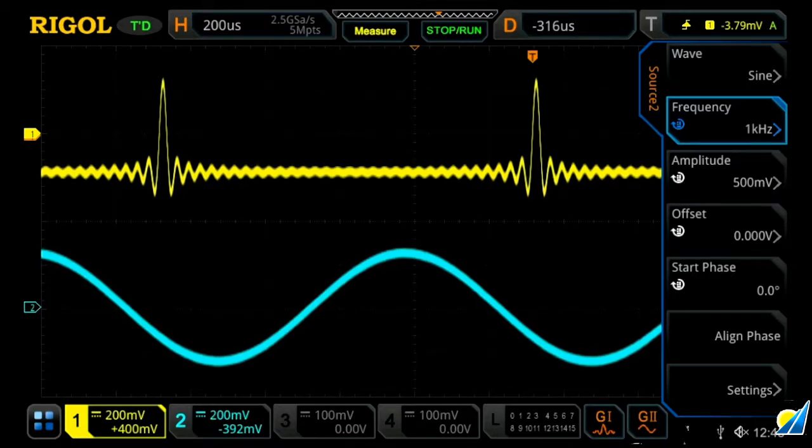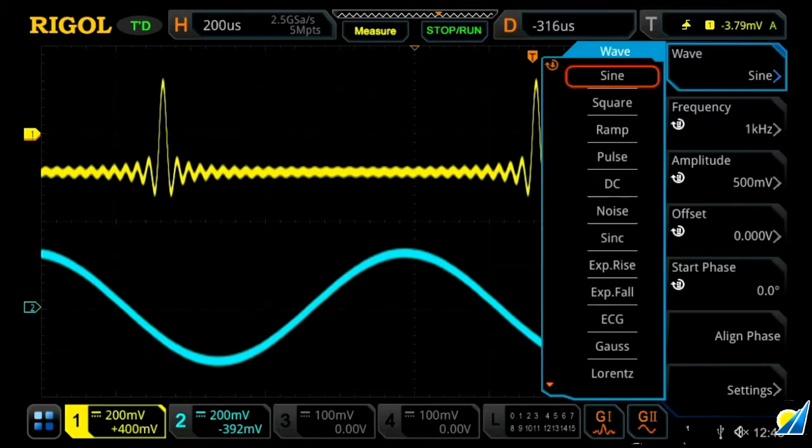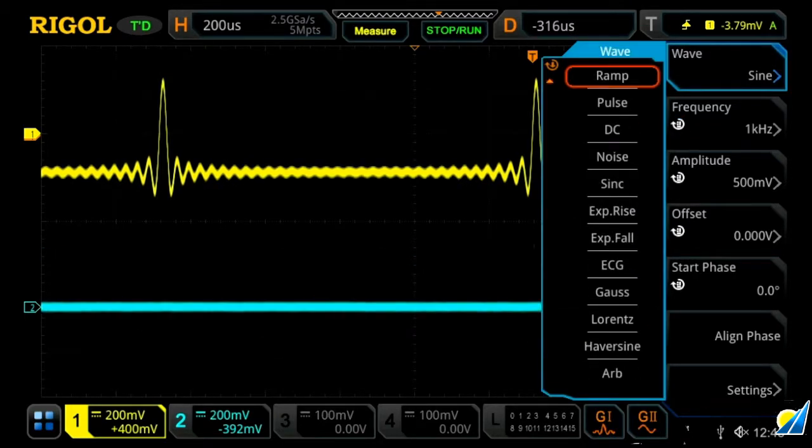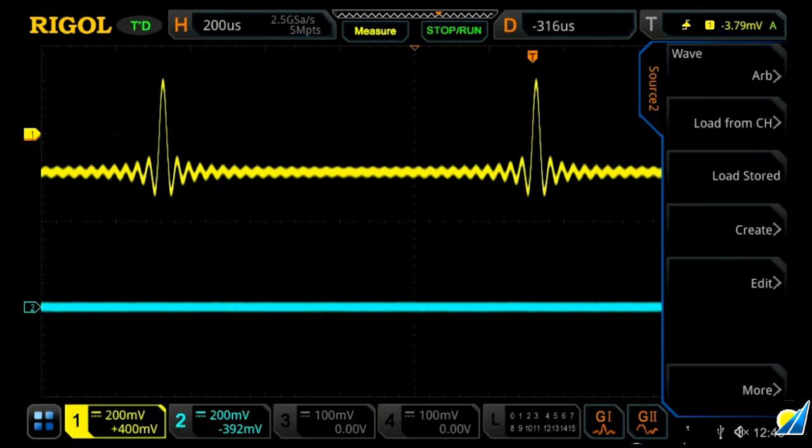And what we're going to do here is select our waveform. We're going to actually go all the way down and select arbitrary. And then from here this is where you can load a stored channel if you have a flash drive, you can create a function or edit one, or you can load one from a channel.